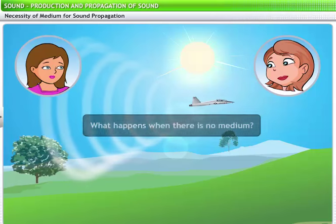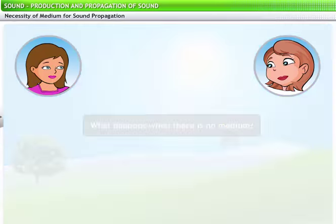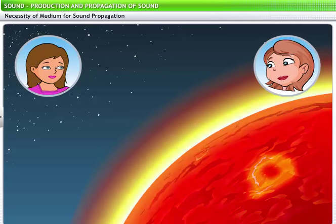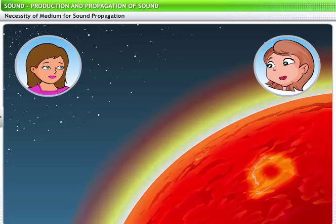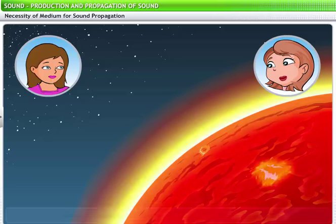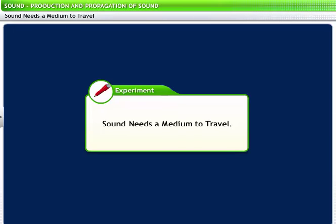But then, what happens when there is no air or no other medium? What happens to a sound produced in such a situation? Sound cannot travel in the absence of a medium. We know that the sun is a huge ball of fire. The reactions of gases in the sun result in explosions that produce light as well as sound. Why do you think we are able to see the sun's light, but not hear the sounds of these explosions? Because sound needs a medium to travel. We just said that sound needs a medium to travel. Let's verify this through an experiment.